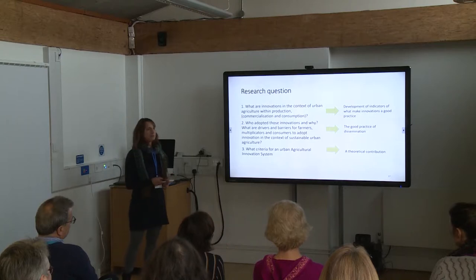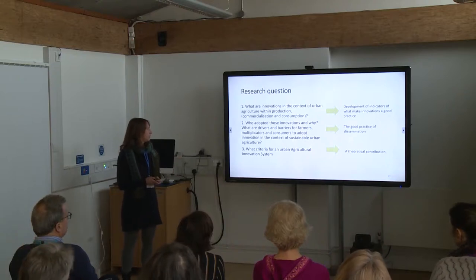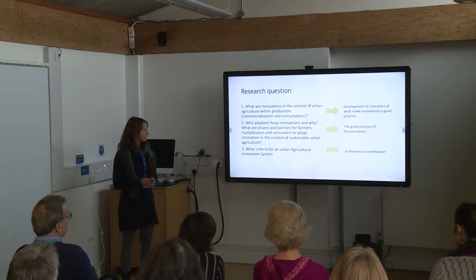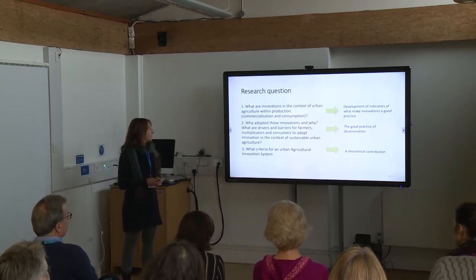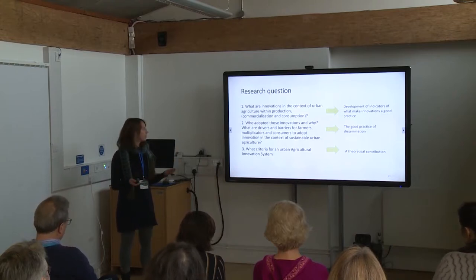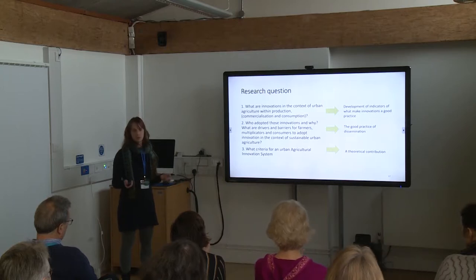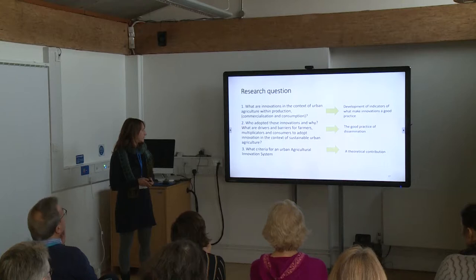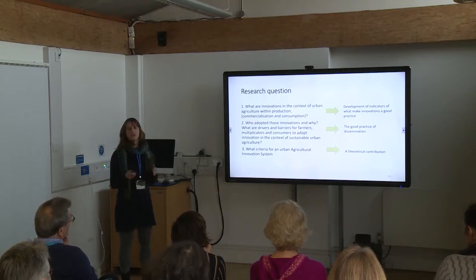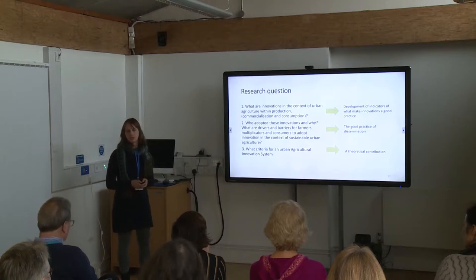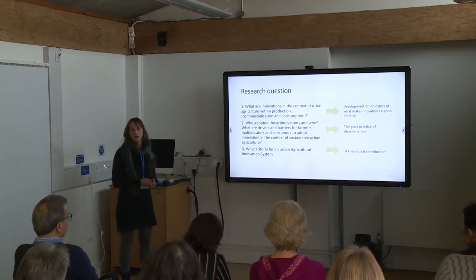My research questions are: what are innovations in general in the context of urban agriculture — here in this presentation within production, but with the idea to also investigate commercialization and consumption, and then develop a set of indicators for what makes an innovation a good practice. And to look in detail at who adopted those innovations and why — what are the drivers and barriers for farmers, multiplicators, and others to adopt innovations in this context — and therefore also develop good practice criteria for dissemination and what criteria for an urban agriculture innovation system can be derived from this perspective, since normally innovations are addressed in the rural area, contributing theoretically to the debate of agricultural innovation systems.